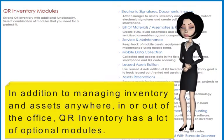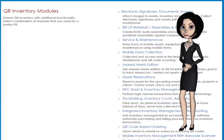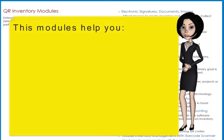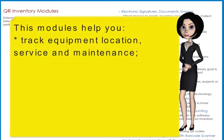in or out of the office, QR Inventory has a lot of optional modules. These modules help you track equipment location, service and maintenance.